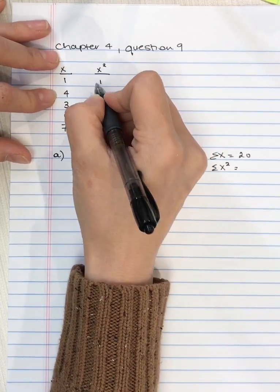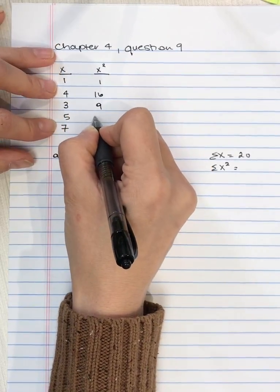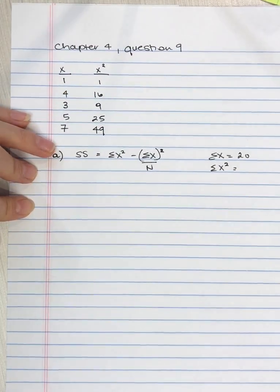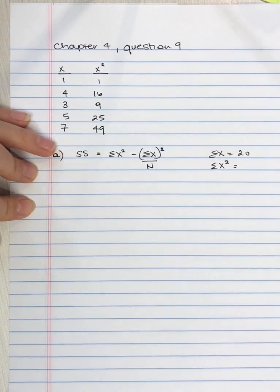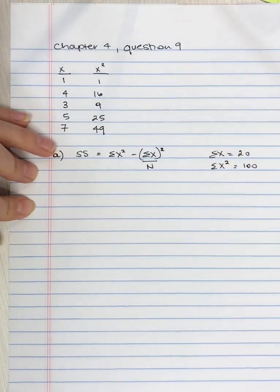1 squared is 1, 4 squared is 16, 9, 25, 49. So we take 1 plus 16, plus 9, plus 25, plus 49, and we get 100. And I'm just going to double check my math. And it is correct.